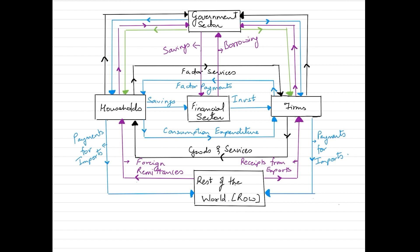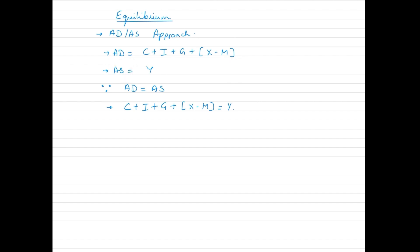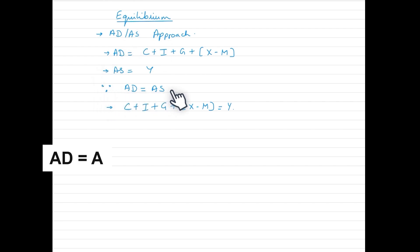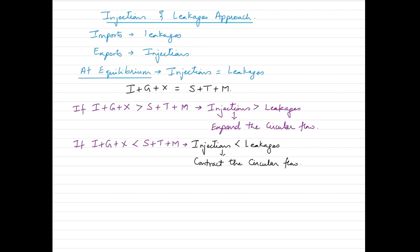Let's see how the equilibrium scenario is depicted in a four-sector model. The first approach is the aggregate demand–aggregate supply (AD-AS) approach. All four components of aggregate demand are included: consumption expenditure, investment expenditure, government expenditure, and net exports. Since aggregate supply equals income, at the point of equilibrium AD equals AS — this is the equilibrium equation under the AD-AS approach.